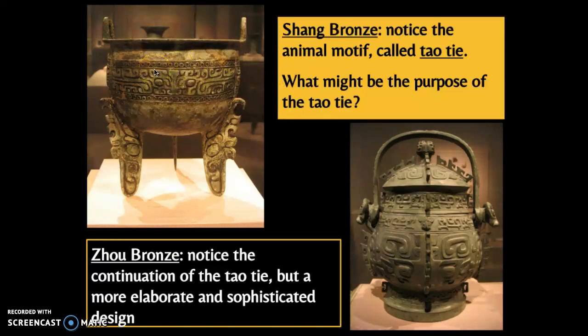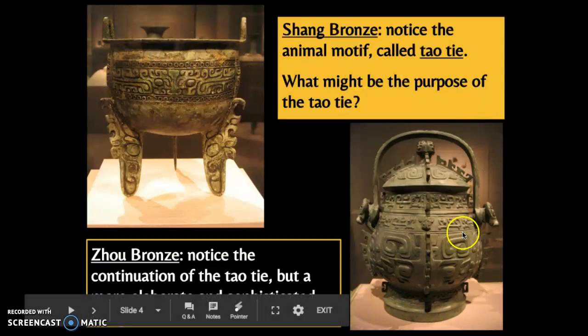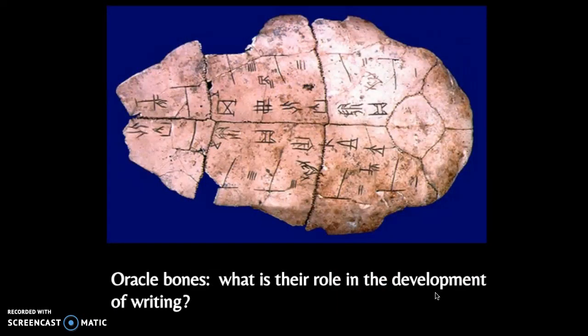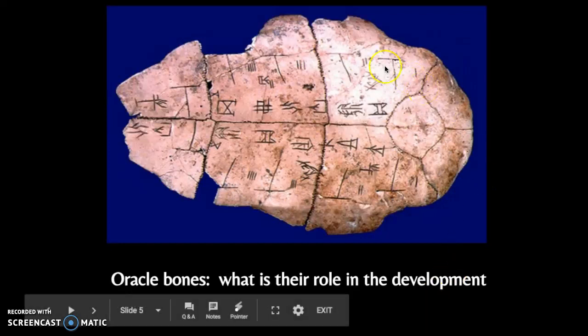From the earliest forms of the Shang bronze vessels we see the Dao Tai, which we talked about in class, and even with the Zhou dynasty we see the symbols carry on. The purpose is still somewhat mysterious, but perhaps symbolizing nature or the spirits in nature could be one idea. We also see the use of oracle bones, which we also spoke of in class, where questions were written on these bones.